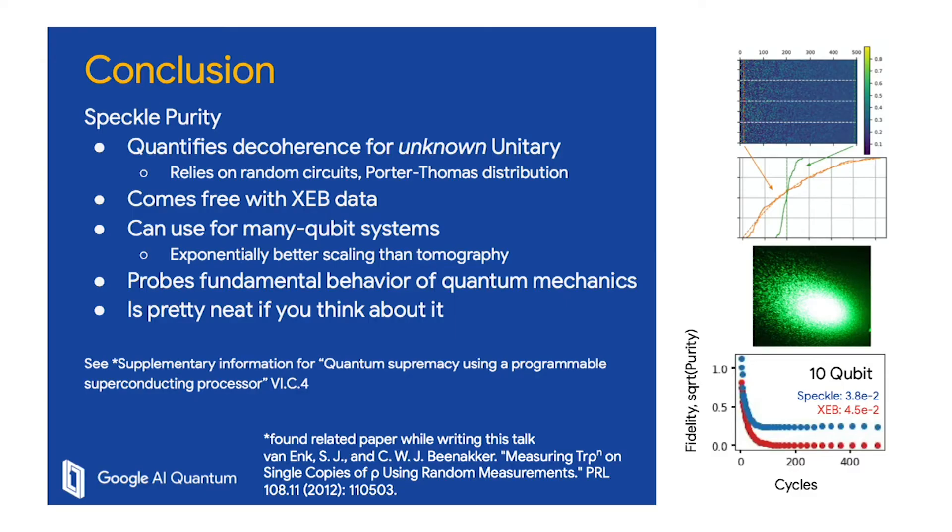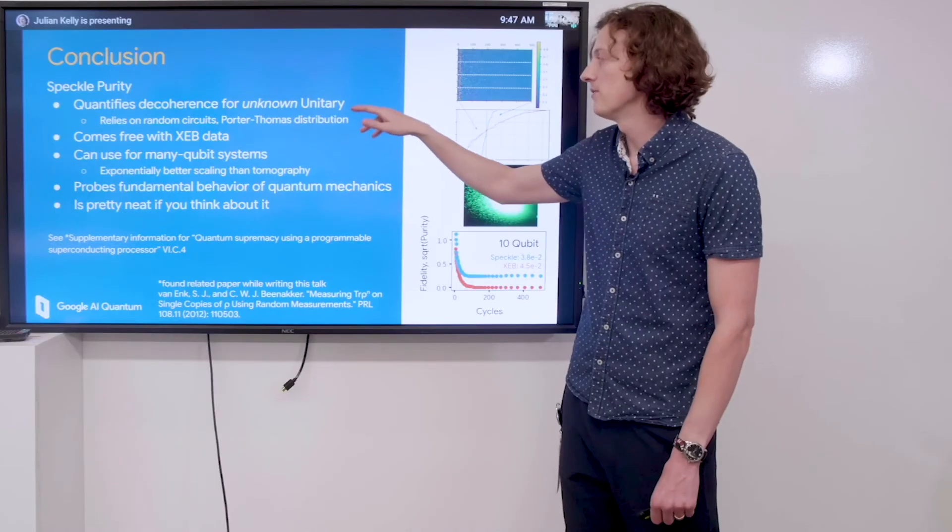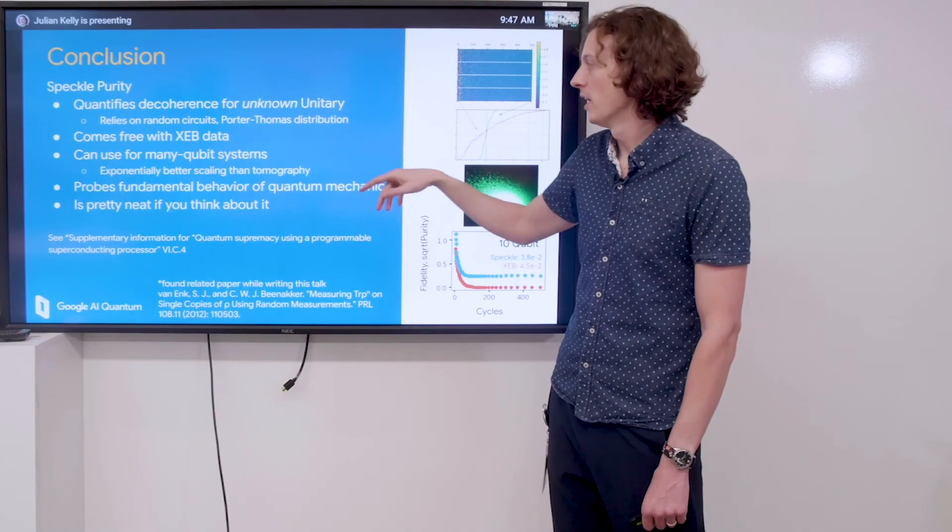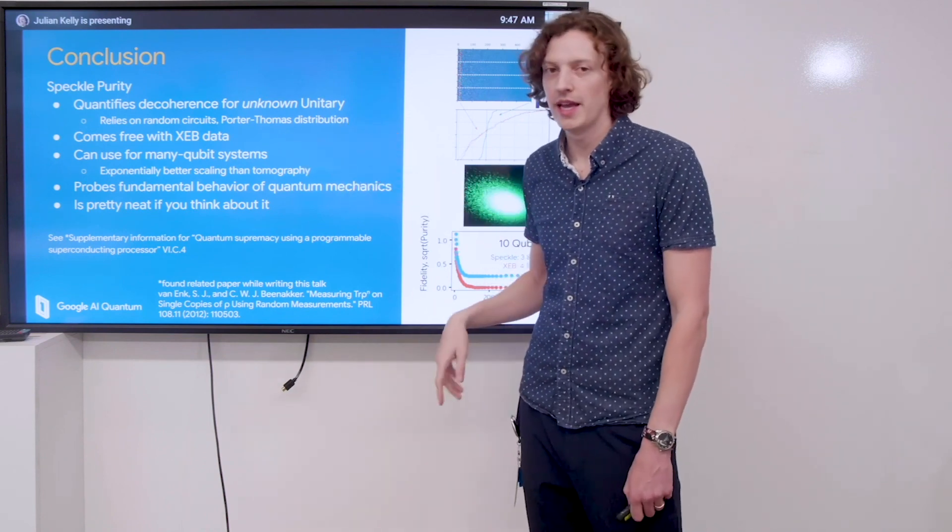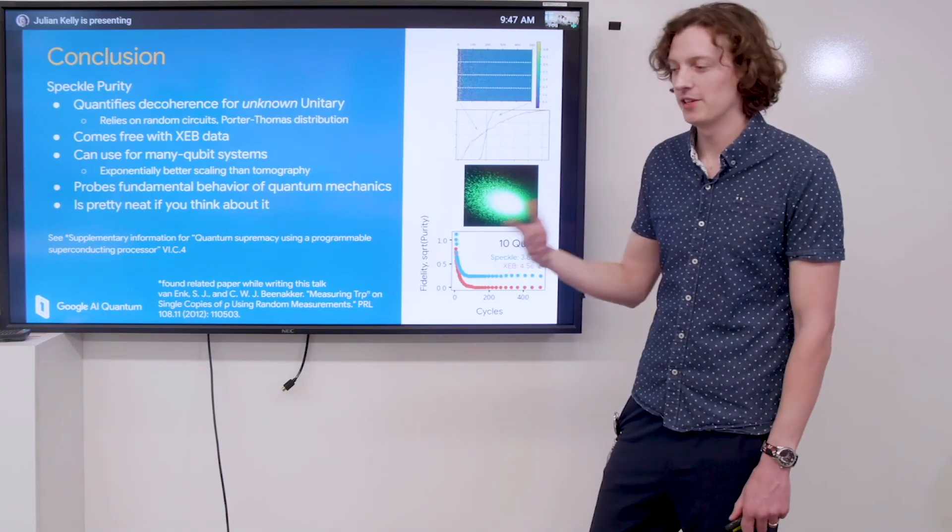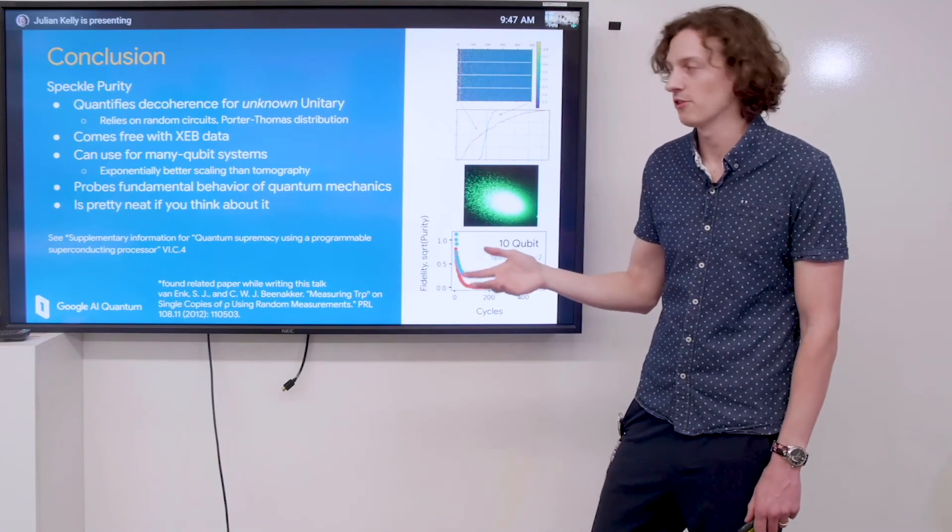In conclusion, we introduced this notion of speckle purity, and it quantifies the decoherence without even having to know the unitary that you did. It relies on random circuits and a Porter-Thomas distribution, which is important. It comes free with any XEB data that you have, so even if you have a historical data set, you can go and extract this from it, which is pretty neat.